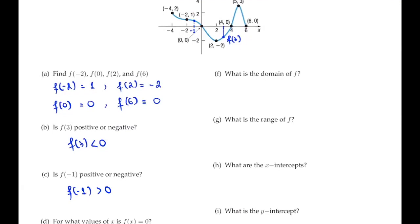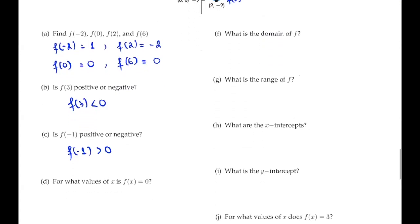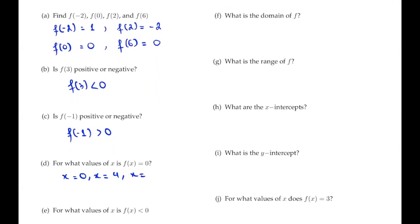In part D, for what values of x is f(x) = 0? This asks for the x-intercepts. f(x) = 0 when x = 0, x = 4, and x = 6. So there are three x-values: x = 0, x = 4, and x = 6.